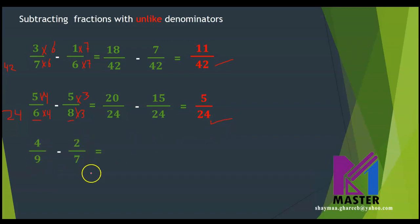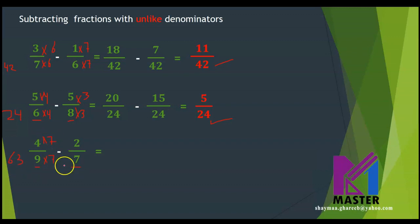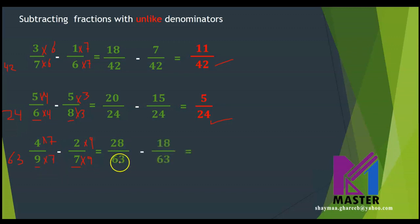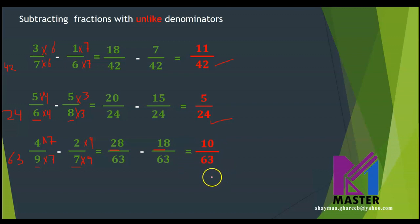4 over 9 minus 2 over 7. The least common multiple between 9 and 7 is 63. The 9 becomes 63 by multiplying by 7 up and down, and the 7 becomes 63 by multiplying by 9 up and down. The first fraction will be 28 over 63 and the second fraction will be 18 over 63. 28 minus 18 equals 10 over 63. Remember, the denominator stays the same. Can I simplify this fraction? No — then this is the simplest form and the final answer.